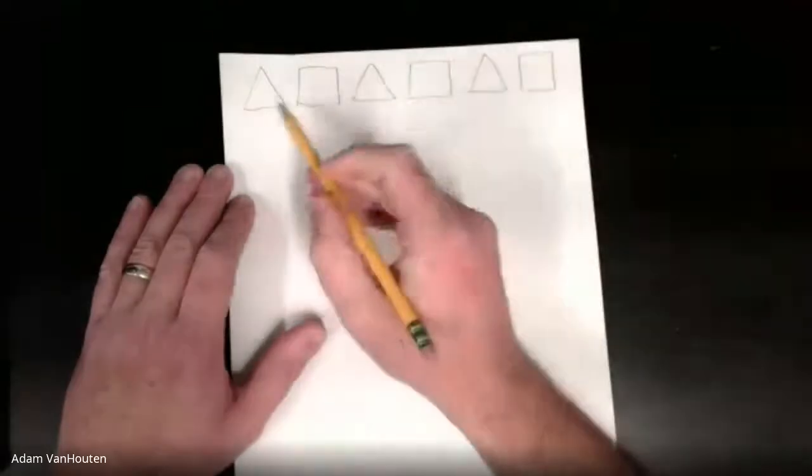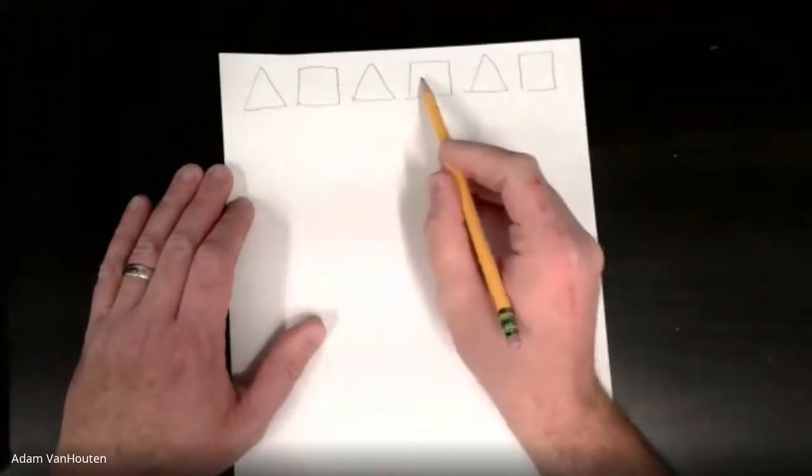So let's say I make a triangle and a square and a triangle and a square and a triangle. So that's a pattern because I'm doing triangle, square, triangle, square, triangle, square.